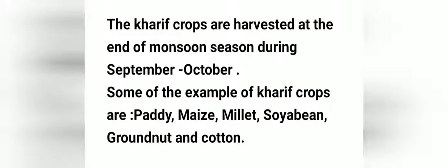Some examples of Kharif crops are paddy, maize, millet, soybean, groundnut, and cotton. Harvested means faslon ko kaatna. To Kharif ke faslon ko hum September-October mein kaatte hain. Examples include rice, groundnut, and soybean.